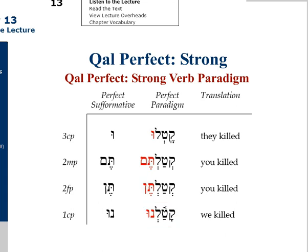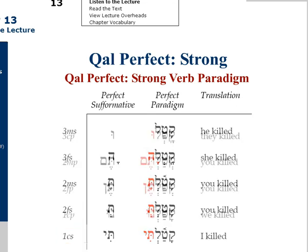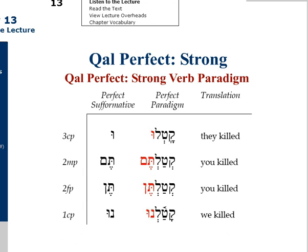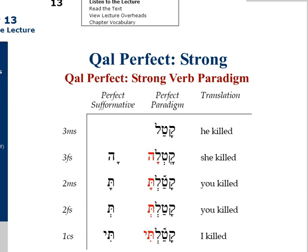Let's make a few observations on the paradigm. First, the paradigm moves from third person to second person to first person — singular forms first, then to the plural forms. Secondly, the qal-perfect third masculine singular form, katal, is also the lexical form. That is, this spelling is how triconsonantal verbs are listed in a standard lexicon. Our third observation: most verbs are triconsonantal, though some are biconsonantal. You know that biconsonantal verbs are considered to be weak — they will be studied in chapter 14.